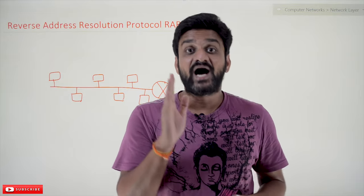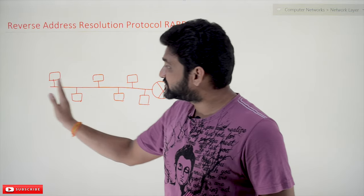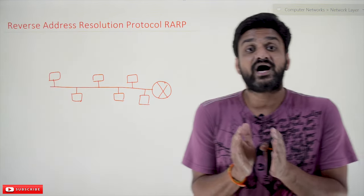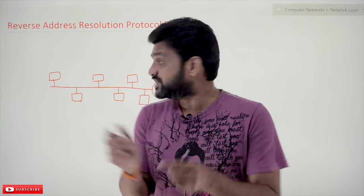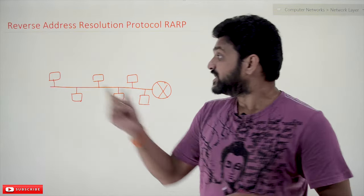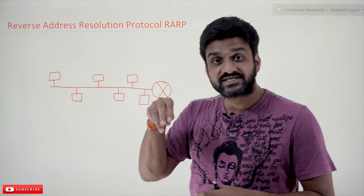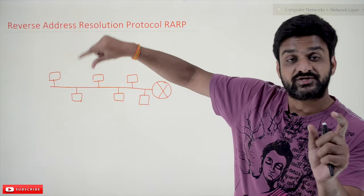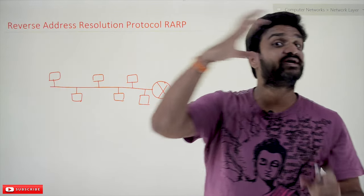Whenever networks do not have secondary memory devices — hard disks are not there for the systems in the network — such systems don't have the capacity to remember IP addresses. Every system will have a Network Interface Card (NIC card), and on that NIC card we will have the MAC address. So we have the MAC address and we need to get the IP address.